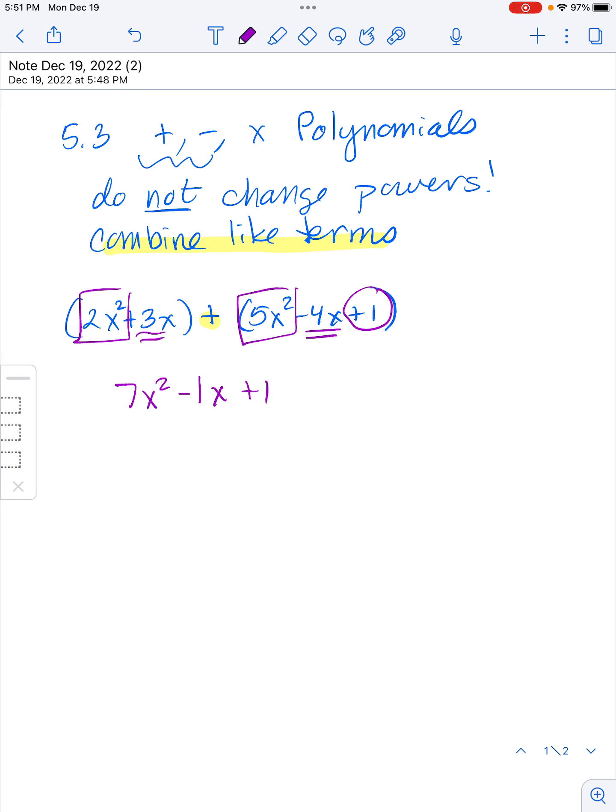Now let's say you had that exact same problem, but it was subtraction instead. My pen just decided to die. As always, if it's subtraction in between, you still are not going to change the powers. You still are going to be just doing like terms. So what you have to do is pretend there's a negative one out here and distribute that to all these other terms.